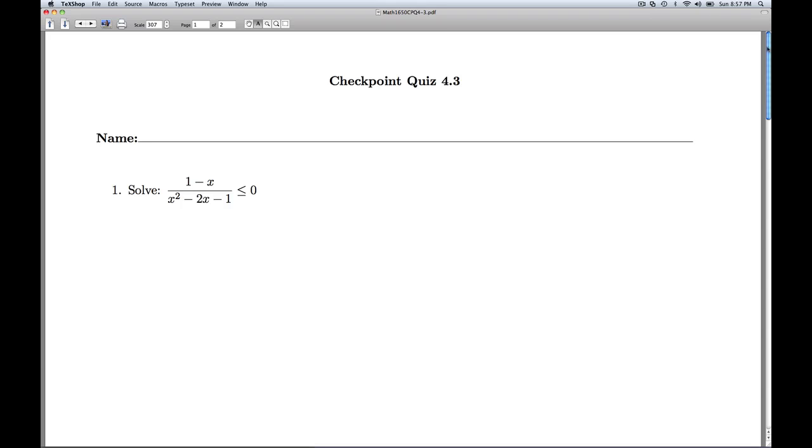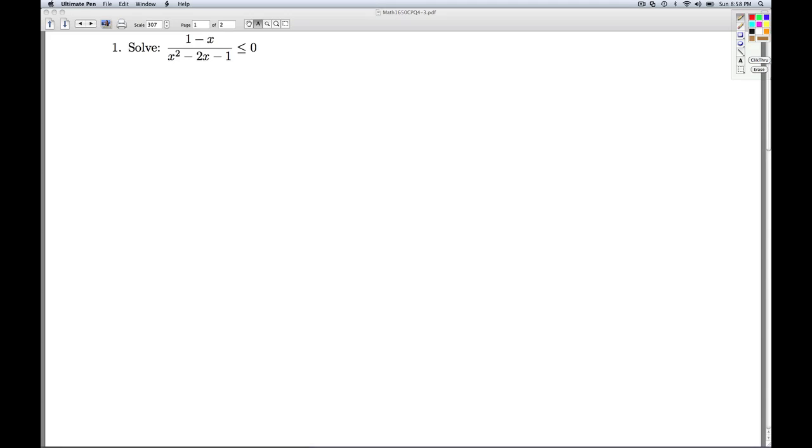Hi folks, this is Checkpoint Quiz 4.3. Number one, we're asked to solve a rational inequality. So the first step in solving one of these is we want to get everything on one side and zero on the other. Fortunately for us, this is already in that form.